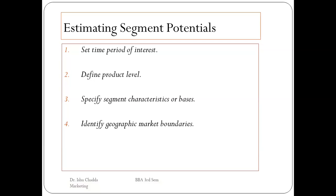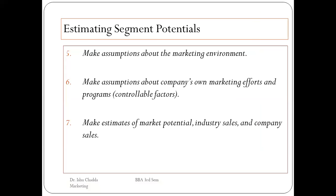Estimating segment potential: set a time period of interest, define your product level, specify segment characteristics or basis, then identify geographic market boundaries. You must examine the main segment potential, check the interest, see the product level and basis for market segmentation, and check the geographic location. Then make assumptions about the marketing environment and the company's own marketing efforts and programs. Finally, estimate market potential, industry sales, and company sales.